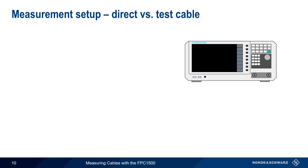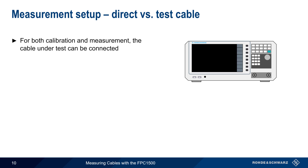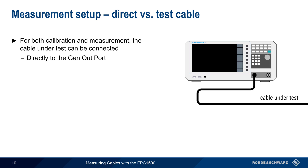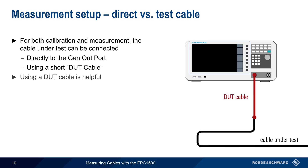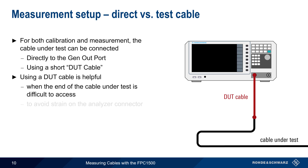Next, we'll discuss how to connect the cable under test. For both calibration and for measurement, the cable under test can be connected to the FPC in two different ways. It can either be directly connected to the Gen Output port on the front of the FPC, or it can be connected to this port using a short DUT cable. There are several reasons why using a DUT cable is helpful. The first is for cases when the cable under test's connector is difficult to access, such as when it terminates in an enclosure, or is attached to a tower or mast. Another reason is that using a DUT cable can reduce wear and tear and/or mechanical stress on the analyzer port.